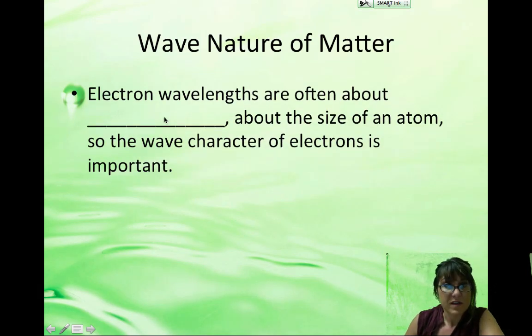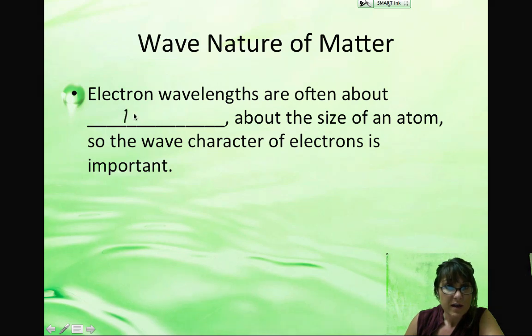Electron wavelengths, you see, are generally in the size range of 10 to the minus 10 meters, which is about the same as the size of an atom. So the wave character of electrons is super important.